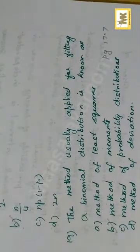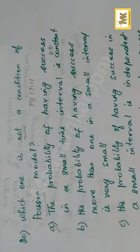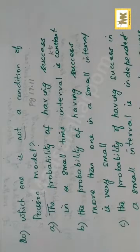Fitting binomial distribution, the method used is method of moments. For Poisson also the same method of moments. Question about which one is not a condition of Poisson - option A is wrong, that is not the condition. If you want to check, check page number 17.11 for the conditions for Poisson model.